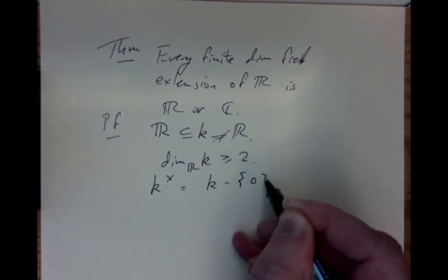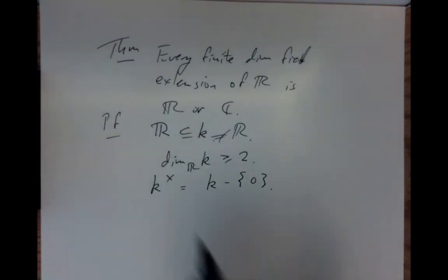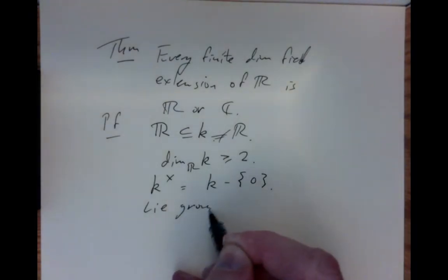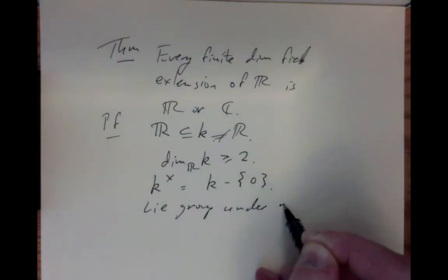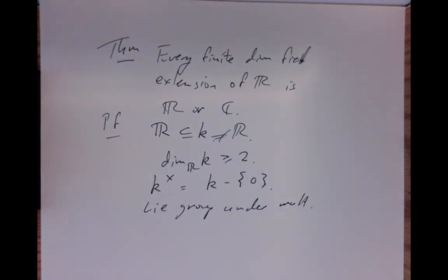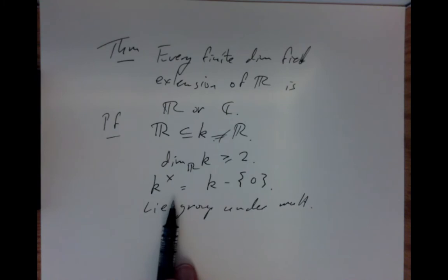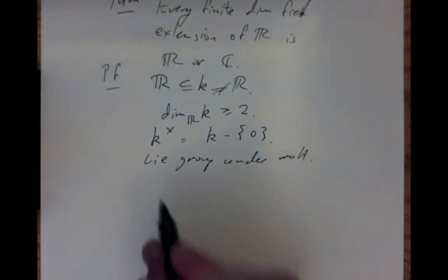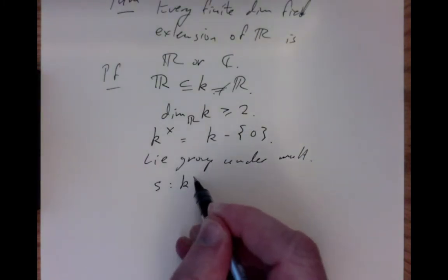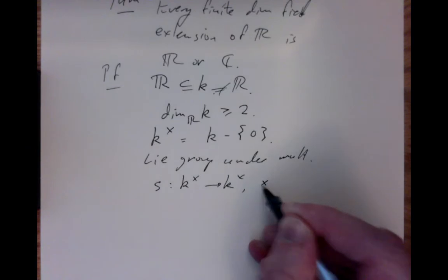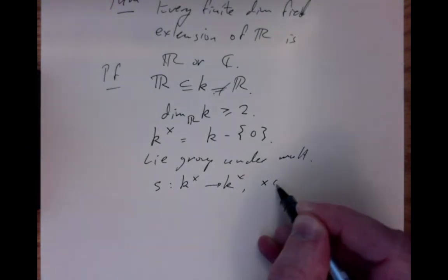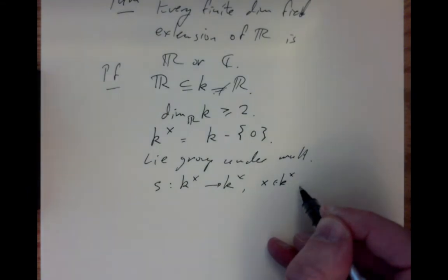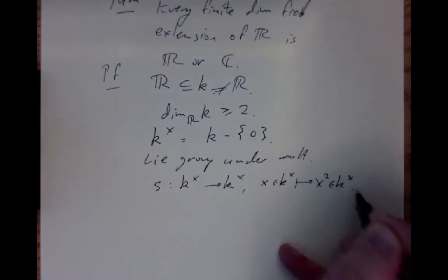Let k× be the non-zero elements of k. That's a Lie group under multiplication, because multiplication is just a linear transformation of each factor — it's a linear operation, hence smooth. We consider the map S: k× → k× given by S(x) = x². This is a smooth map because multiplication is smooth. Differentiating explicitly, S′(x) applied to a vector h is just 2xh — the same as in one-variable calculus.